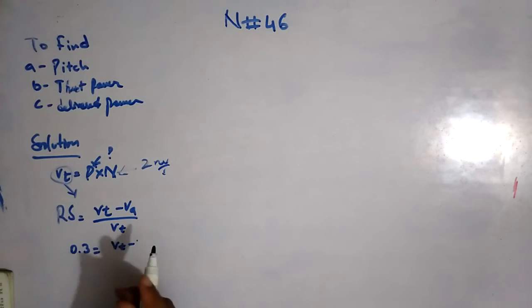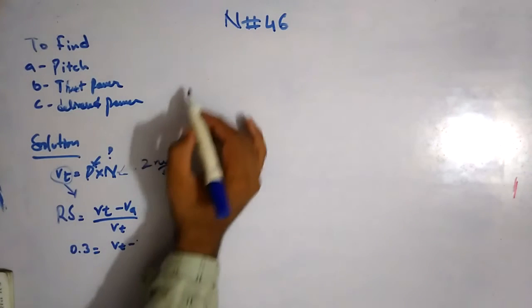VA is the speed of advance, and the speed of advance is given. Yeah, it's 12 knots.